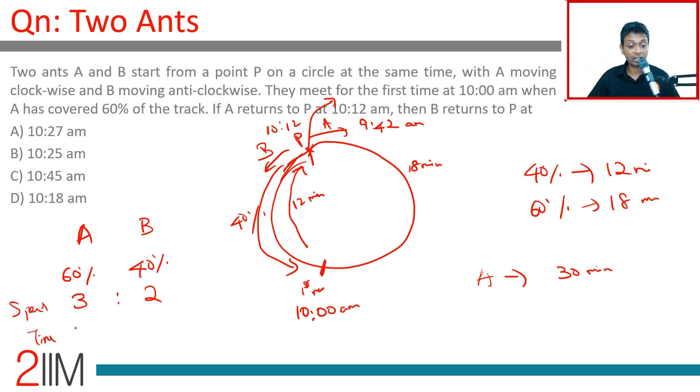So A takes 30 minutes. How much will B take? The ratio is 2:3, so B should take 45 minutes. 2:3 is 30:45. B should take 45 minutes to travel this distance.